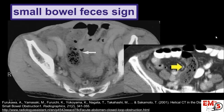Another interesting sign to look for is the small bowel feces sign. You shouldn't actually see what looks like feces inside the small bowel, but right before the transition point, sometimes you can see this mixture of air and liquid that ends up looking like stool. So if you see what looks like stool or feces inside the small bowel, you might be very close to the transition point.